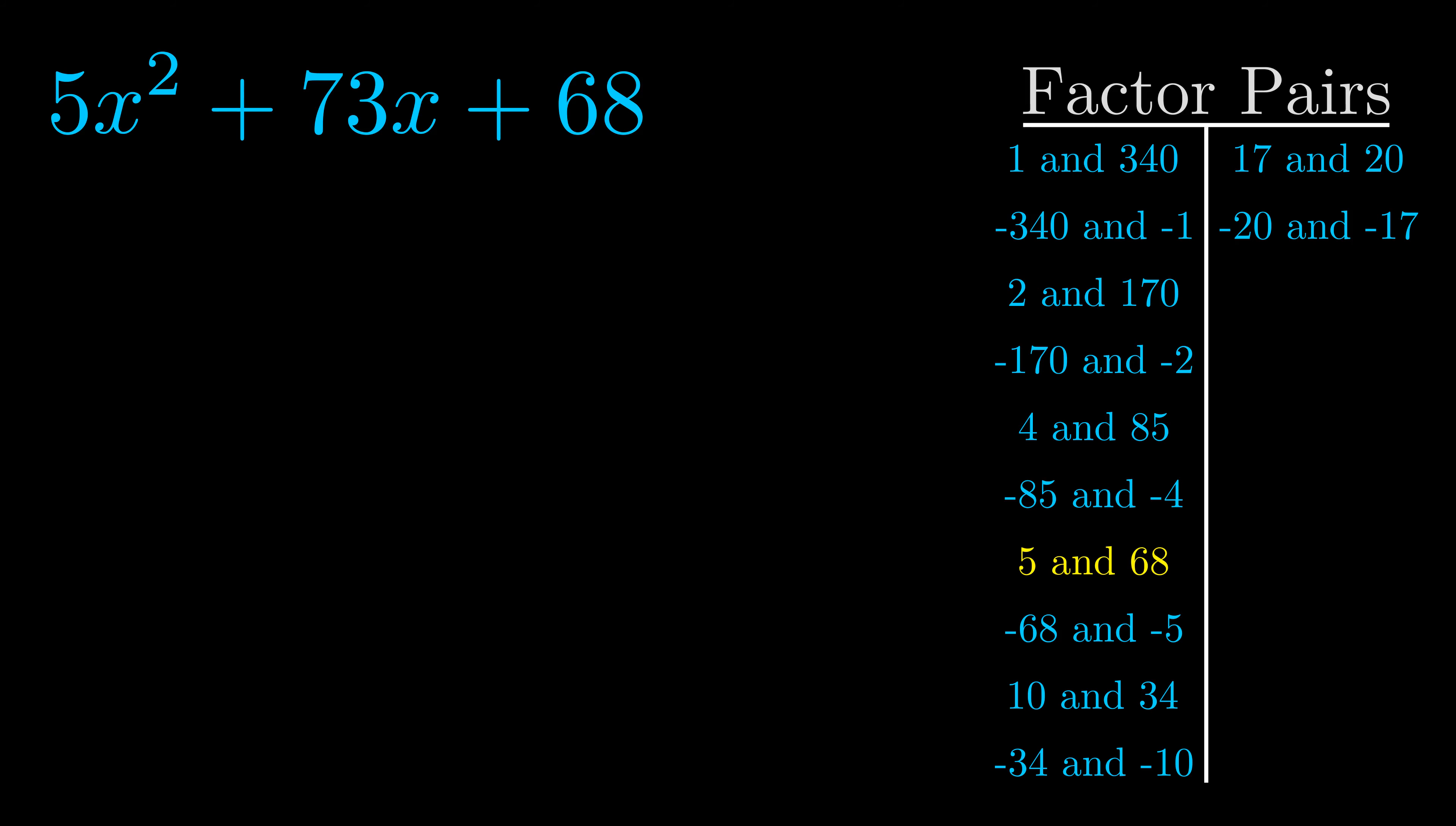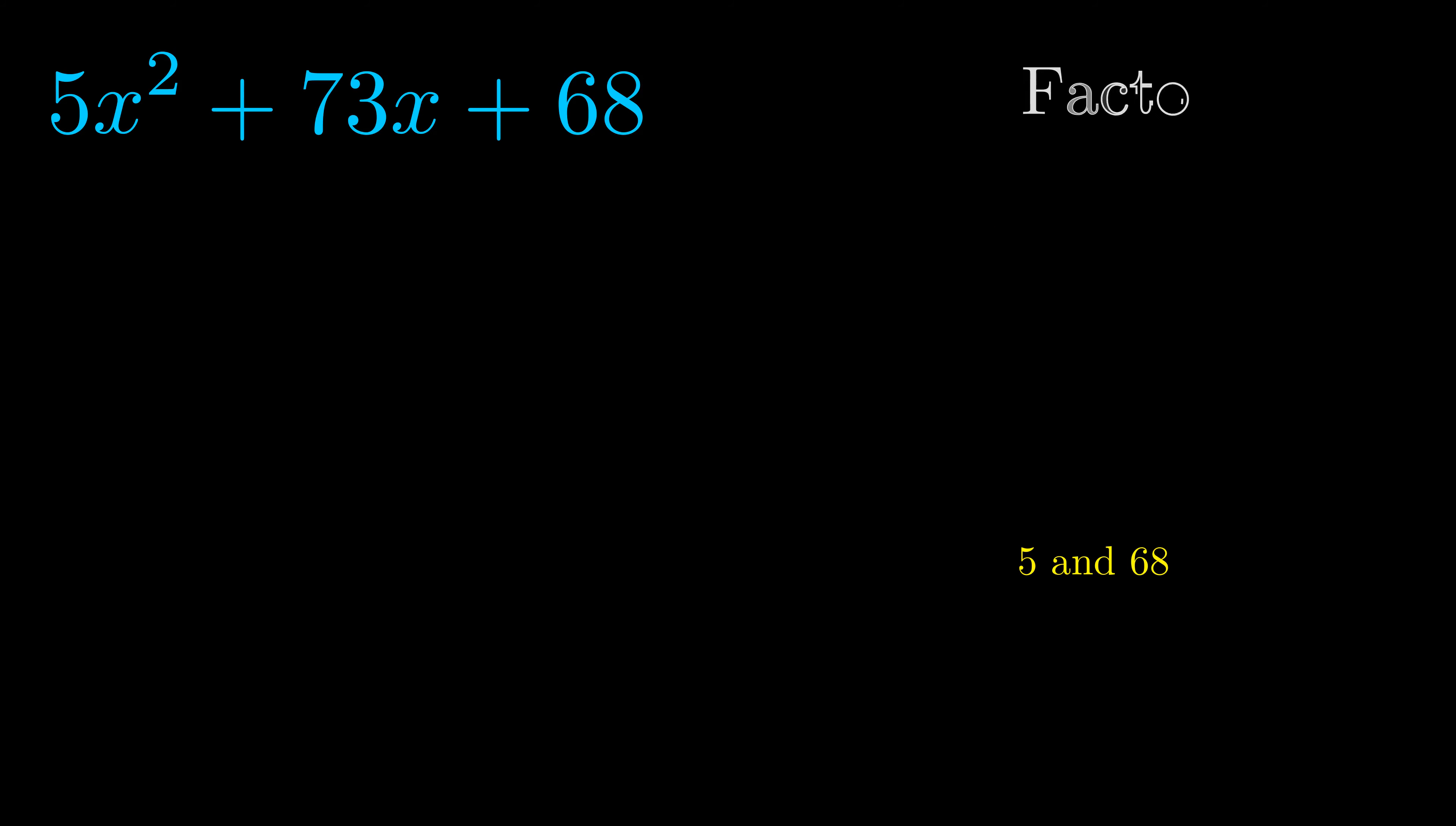And really this is the only factor pair that we need. Now once we have this factor pair, what we want to do is use it to split up the b value.